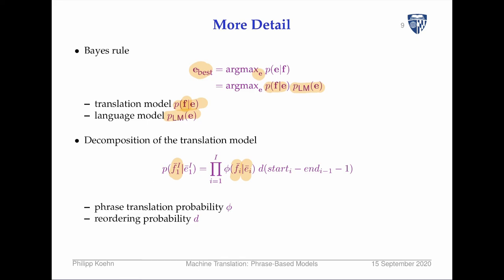This is very similar to IBM Model 1 — you have to explain each foreign phrase given an English phrase. Then we have a distortion model. This is a simple way of capturing reordering — we'll look at more complicated reordering models soon.